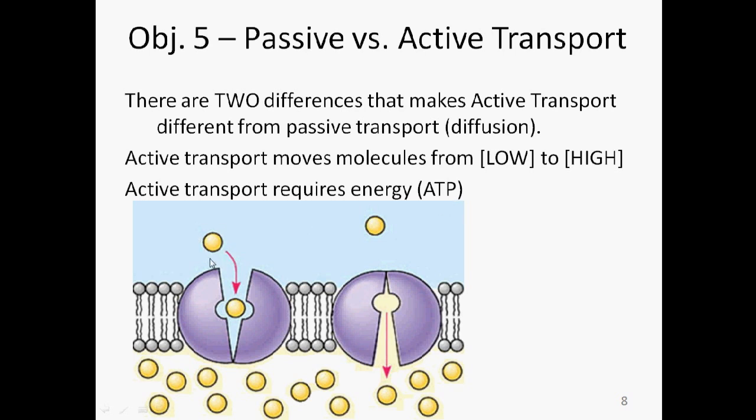Alright, so here's active transport. Low concentration outside the cell. Moving molecules in against the concentration gradient. Again, concentration gradient would be, the arrow would be pointing up. So this is against the concentration gradient. From low to high. It's the opposite of diffusion. So two things that make active transport, active transport.